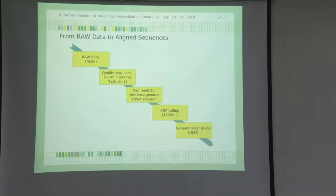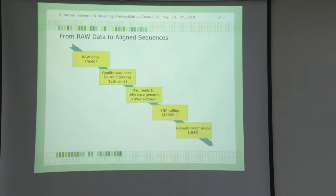Then you start looking at mapped reads, and there are all sorts of different software packages to align things. Important is SNP calling — to identify SNPs — and we did this quite a bit on Wednesday. You use a software called TASL. And finally, if everything works, you have a general linear model of your genome, meaning if there are ten chromosomes, you should have ten linkage groups in a meaningful linear arrangement.